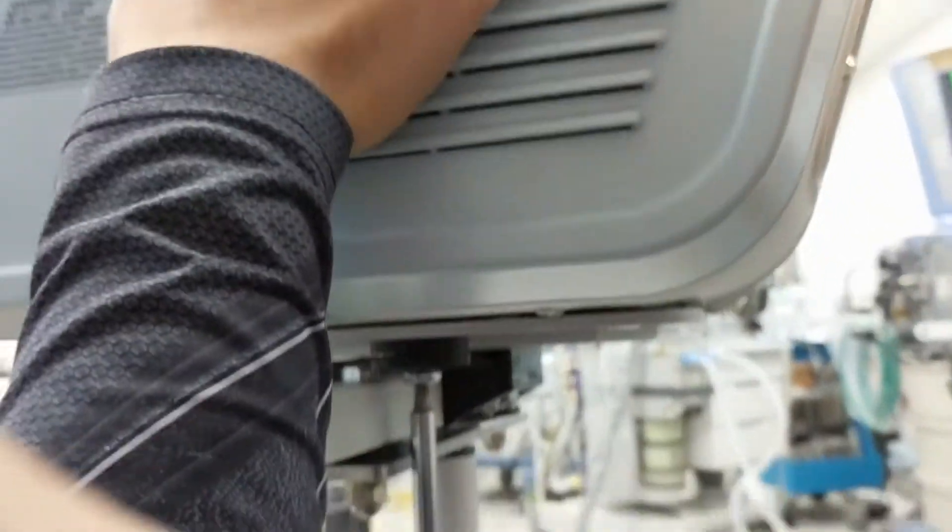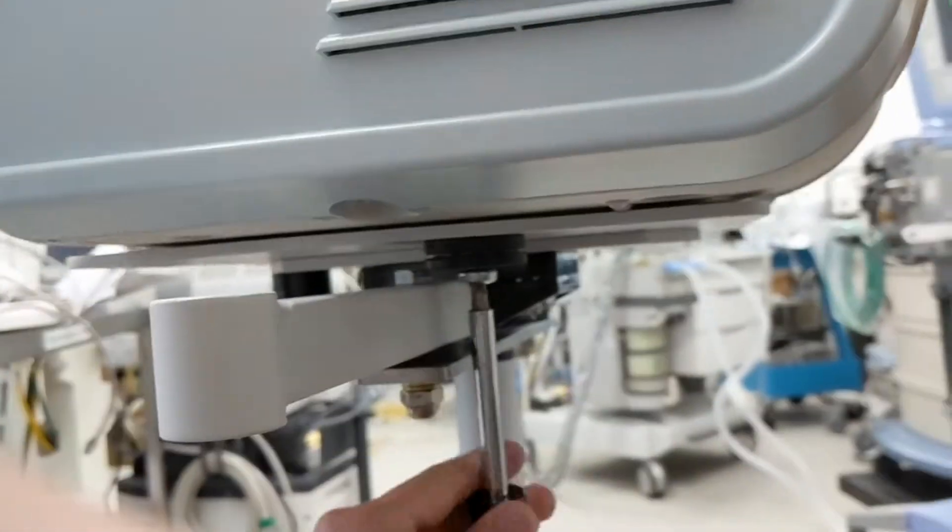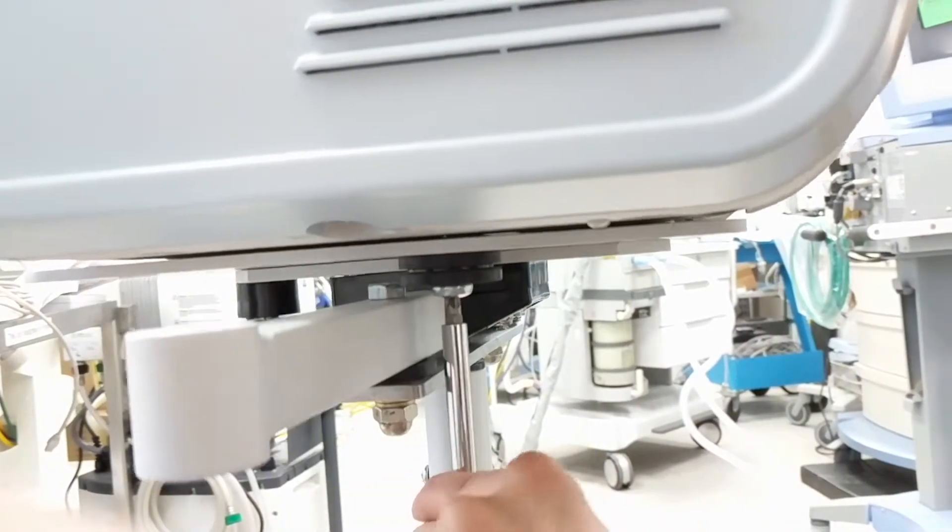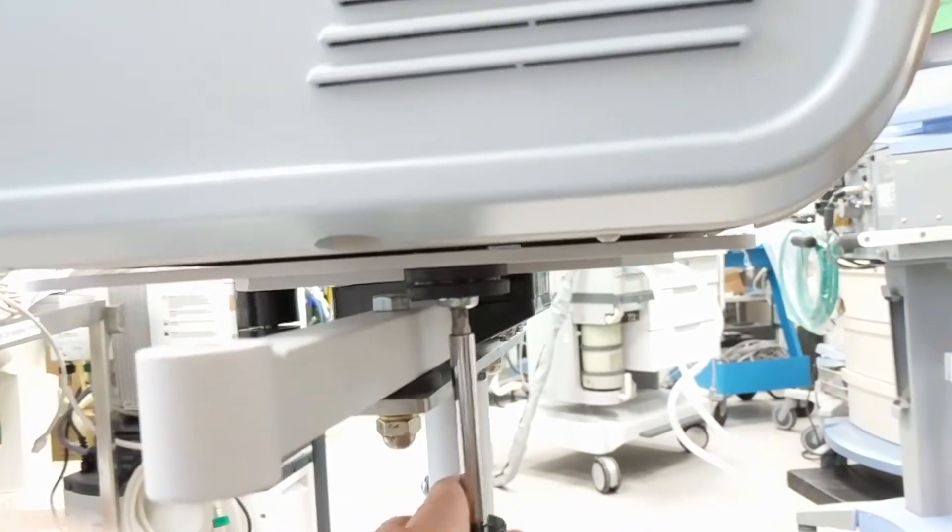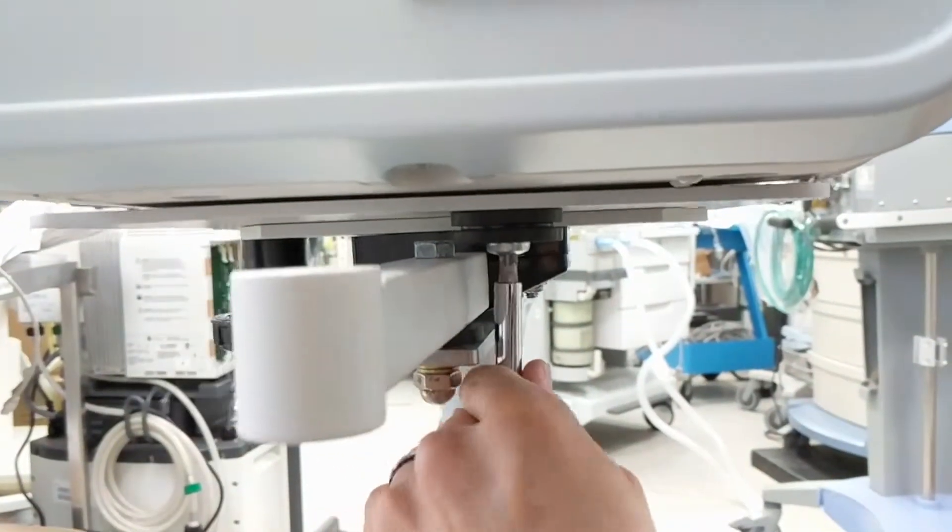It will be a little tight at first because of the rubber gasket here, but you should be able to secure the machine and secure the unit. Right in there.